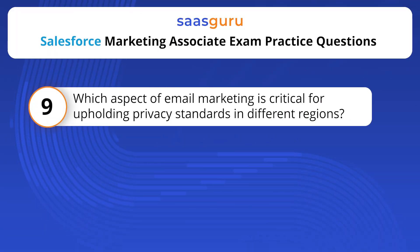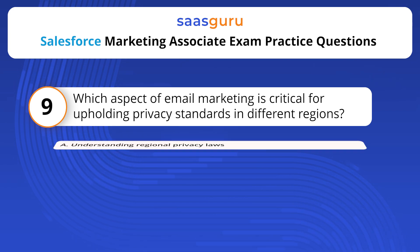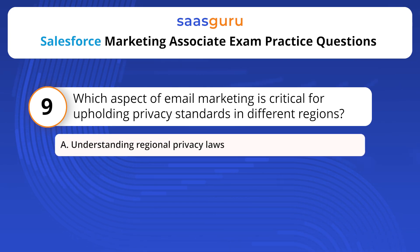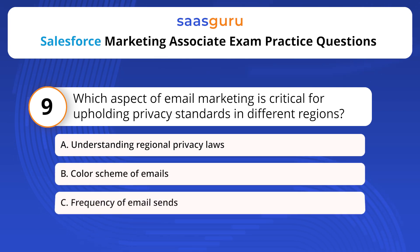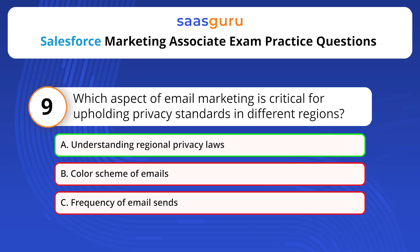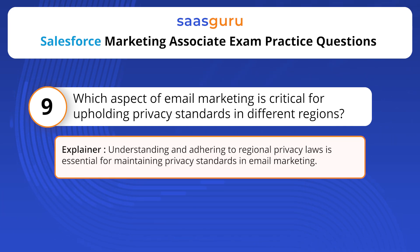Which aspect of email marketing is critical for upholding privacy standards in different regions? Options: Understanding regional privacy laws; color scheme of emails; frequency of email sends. The answer is option A. Understanding and adhering to regional privacy laws is essential for maintaining privacy standards in email marketing.